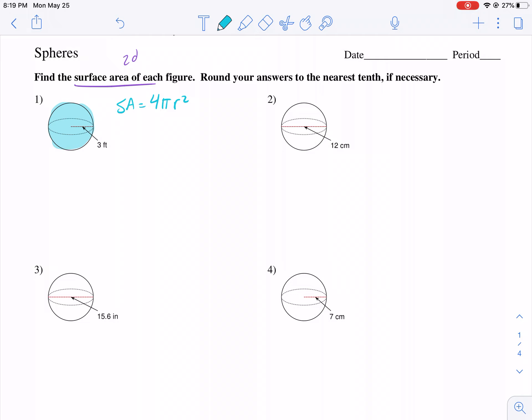For number one, we're already given the radius, so we can go ahead and proceed and just plug in 4π times 3 squared. We get 4 times π times 9, we get 36π. What are the units? Feet squared, and that's our answer for number one.